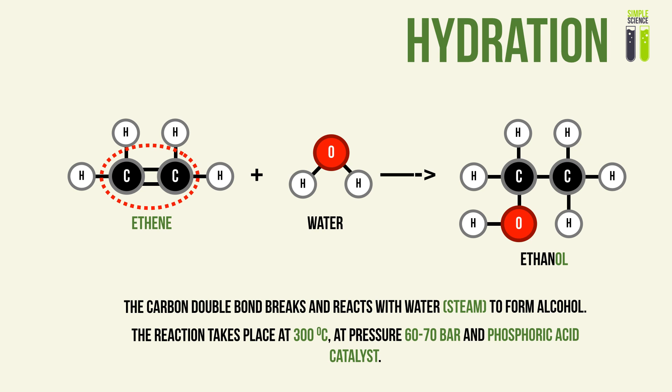This reaction takes place at 300 degrees Celsius and a pressure of 60 bar, and phosphoric acid is used as a catalyst. You need to remember these conditions — this is the reaction to form an alcohol from an alkene.